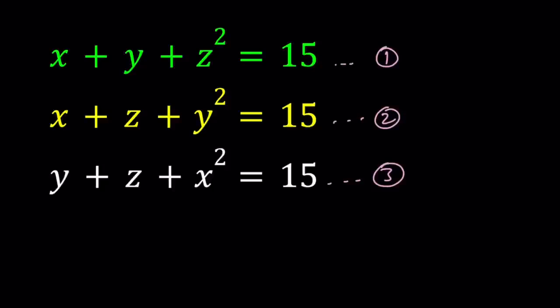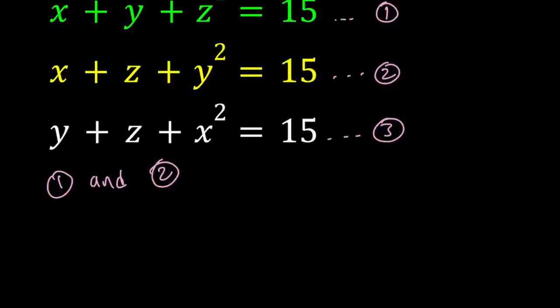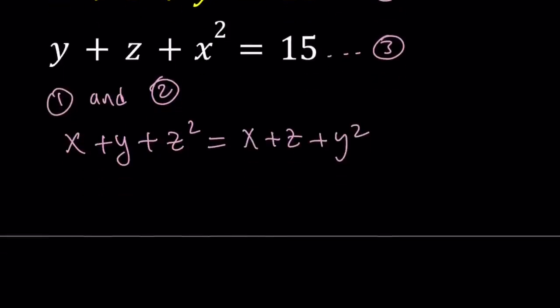Let's go ahead and take one and two. Since they're both equal to 15, I'm going to set them equal to each other. So, this means x plus y plus z squared equals x plus z plus y squared. This is good because x cancels out, leaving us with something nice and factorable.